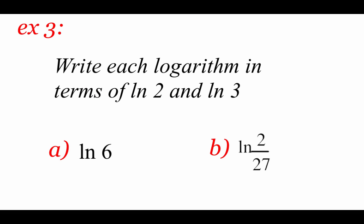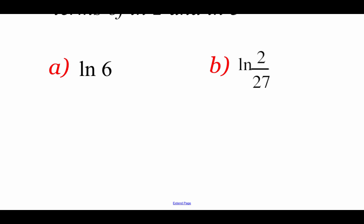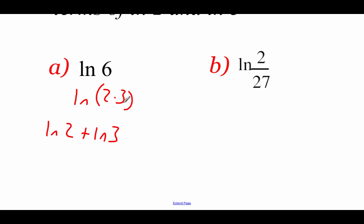In these two examples, we are going to rewrite each natural log using natural log of 2 and natural log of 3. Looking at the natural log of 6 — to get 2's and 3's, we know 2 times 3 equals 6. Now that we have multiplication, we can use our product property to split this up using addition: natural log of 2 plus natural log of 3. And we have this rewritten using natural log of 2 and natural log of 3.